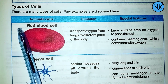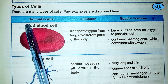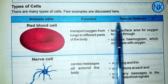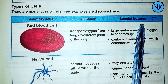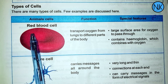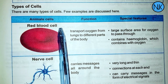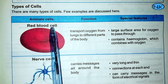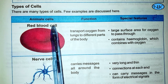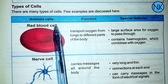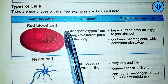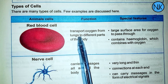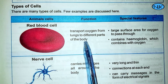Animal cells. We look at animal cells, their function, and their special features. Red blood cells, also known as RBC.